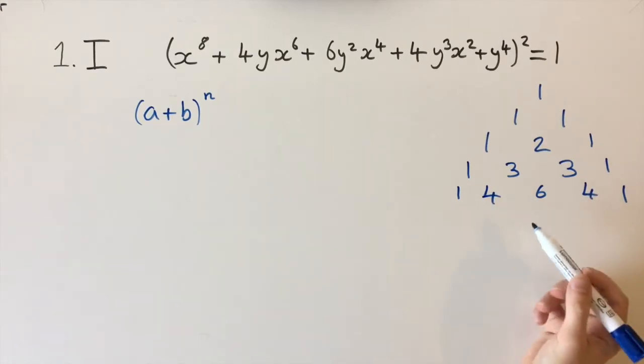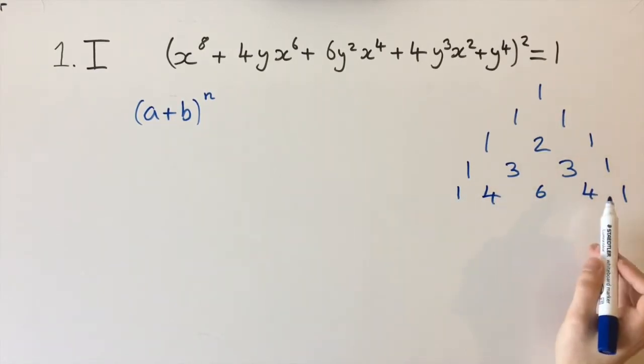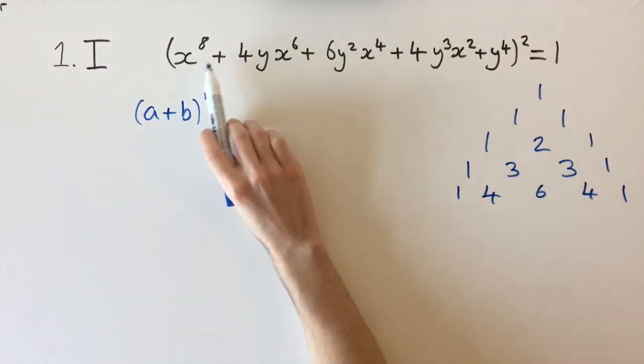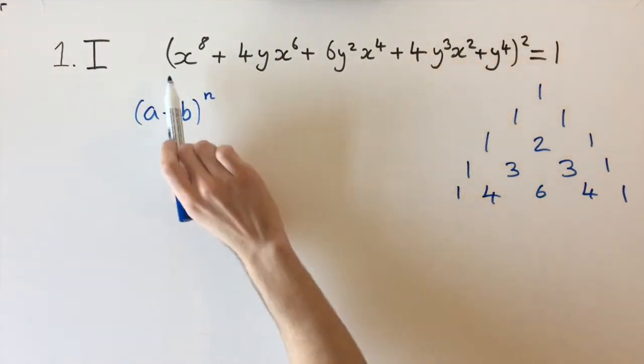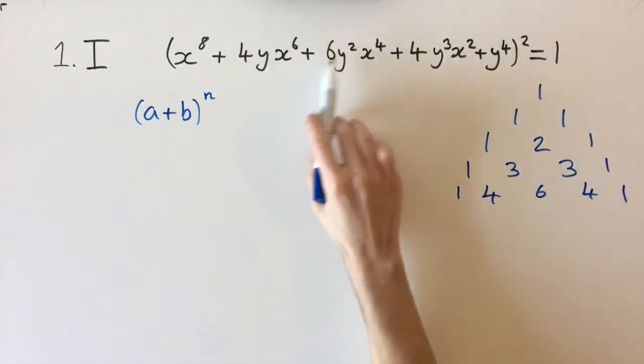Now the connection you need to make is we have 1, 4, 6, 4, 1, and these are the exact coefficients that appear in this expression up here. We have a 1 invisible here, 4, 6, 4, 1.